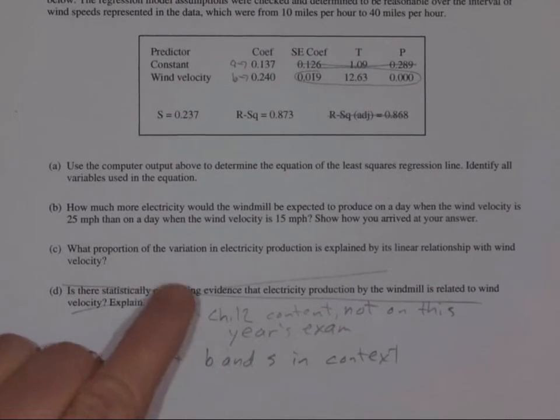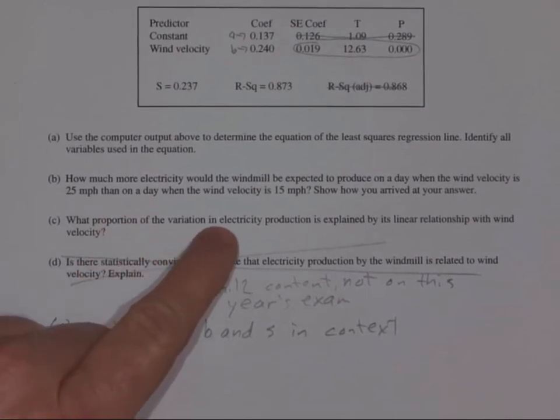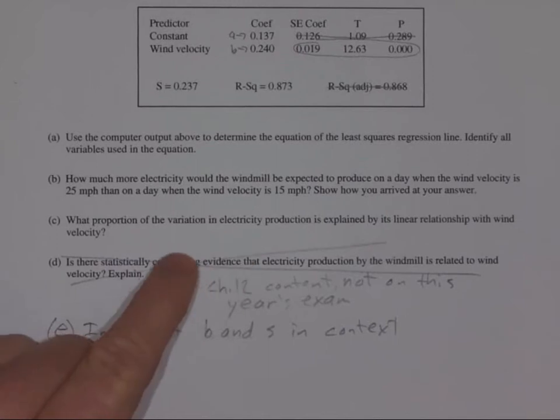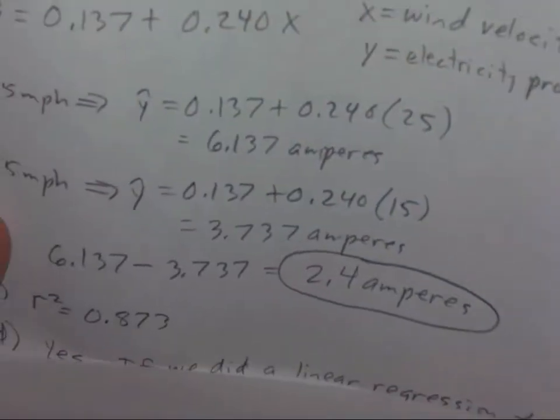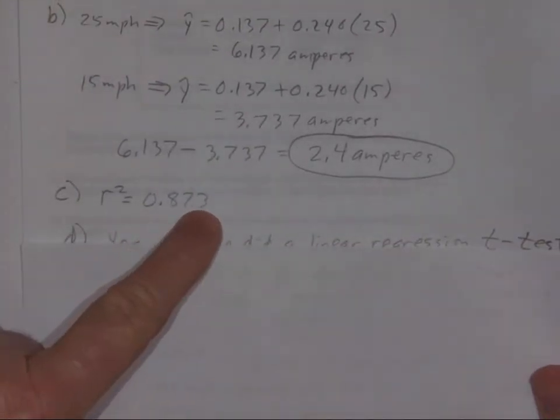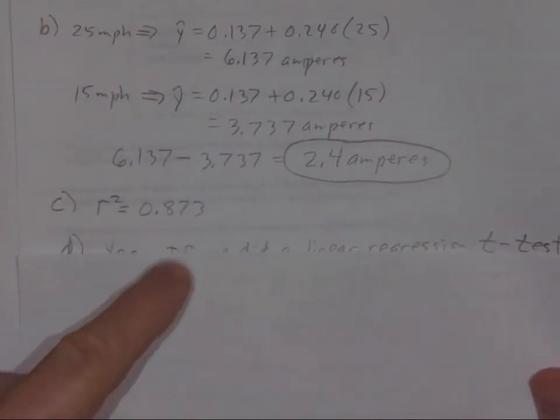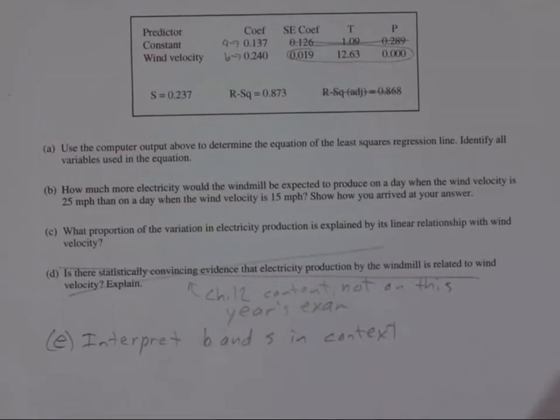Part C: what proportion of the variation in electricity production can be explained by the linear relationship with wind velocity. In other words, what proportion of the change or the variation of the change in Y can be explained by the change in X? That's what R-squared is. So all you had to do is put what R-squared is, which would be 0.873 right there. That is just that thing right there. So that's all there was to that.